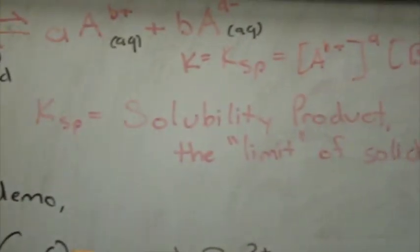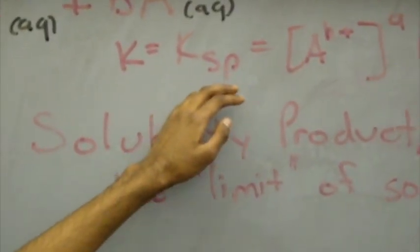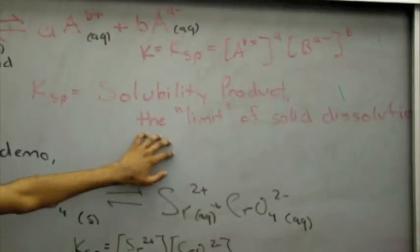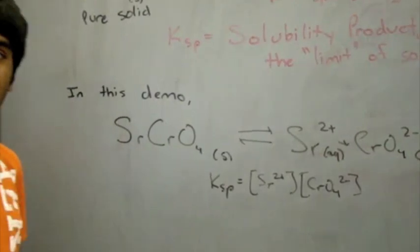Ksp is when a solid dissociates into its ions. The value of Ksp is given by the concentrations of those ions raised by the molar coefficient. Ksp is a solubility product, which is the limit of the solid's solubility.